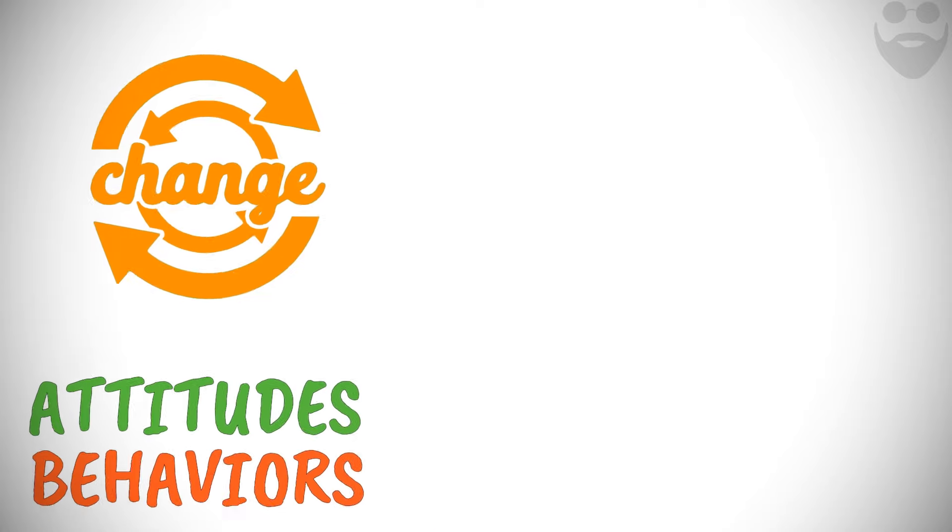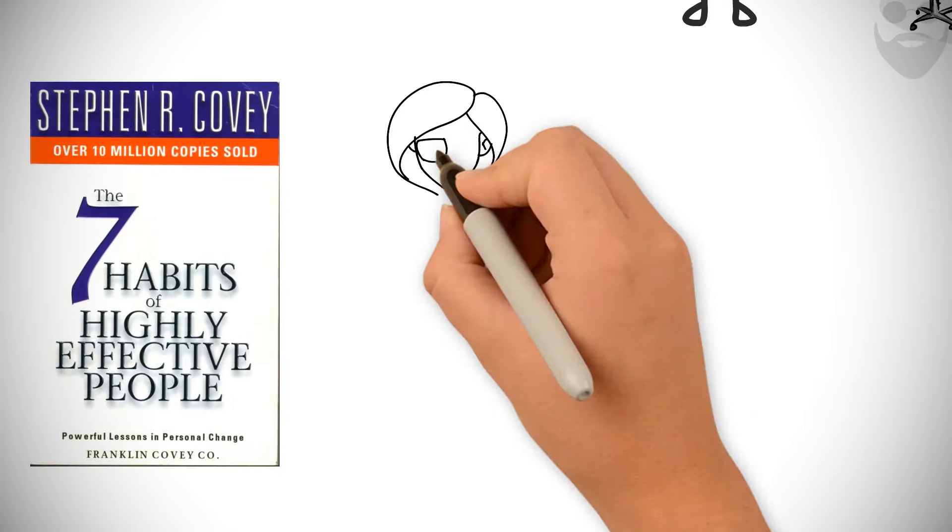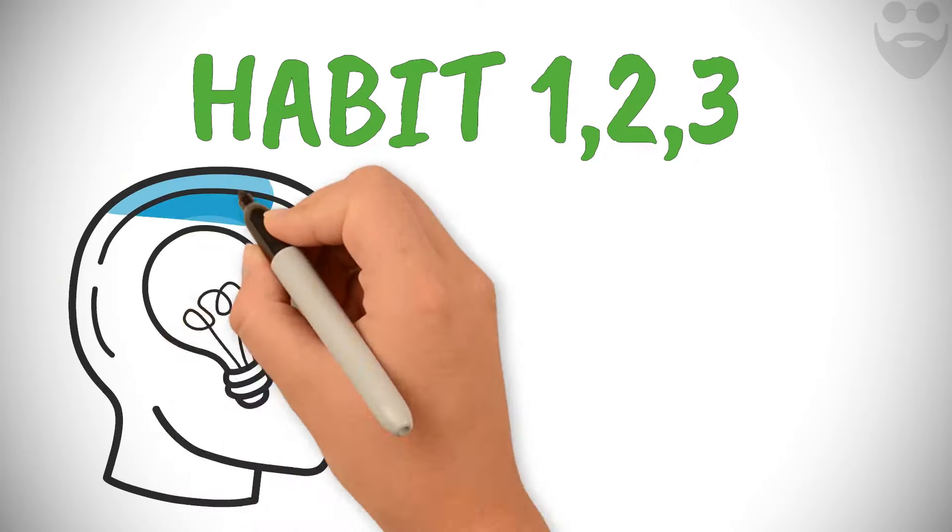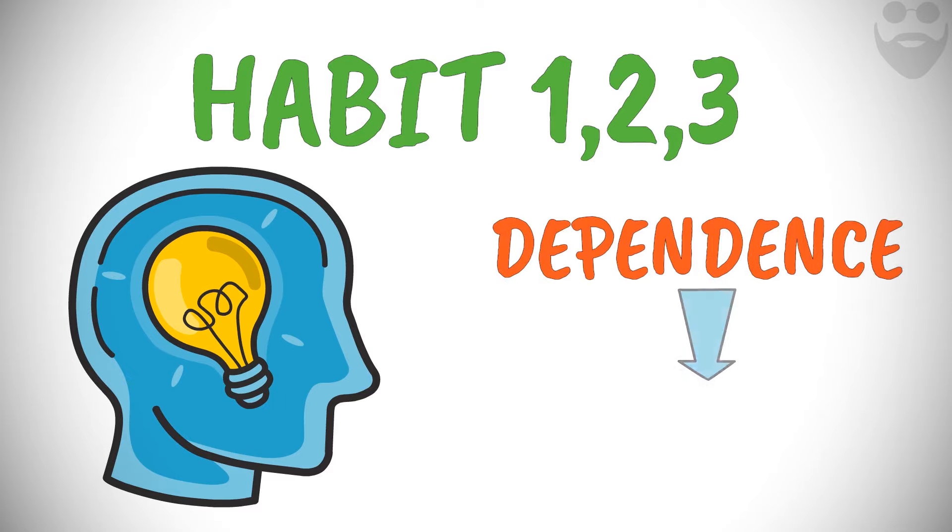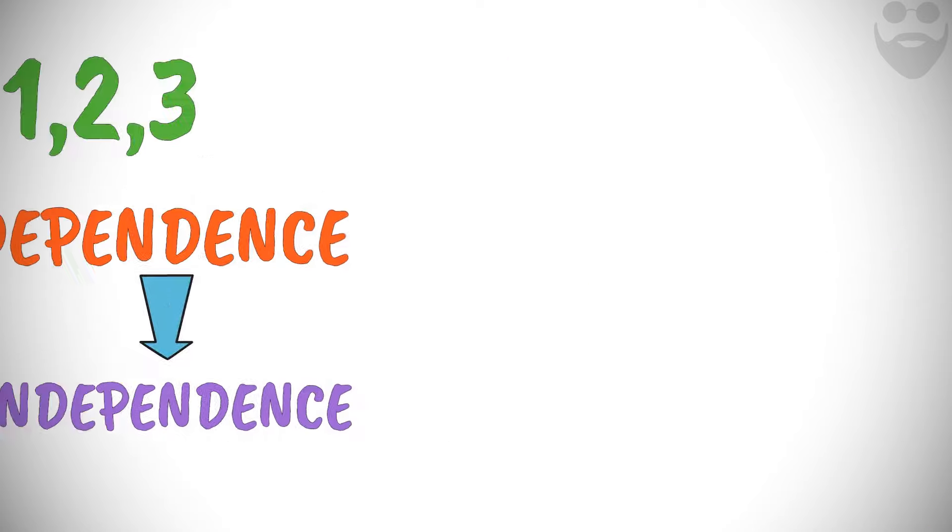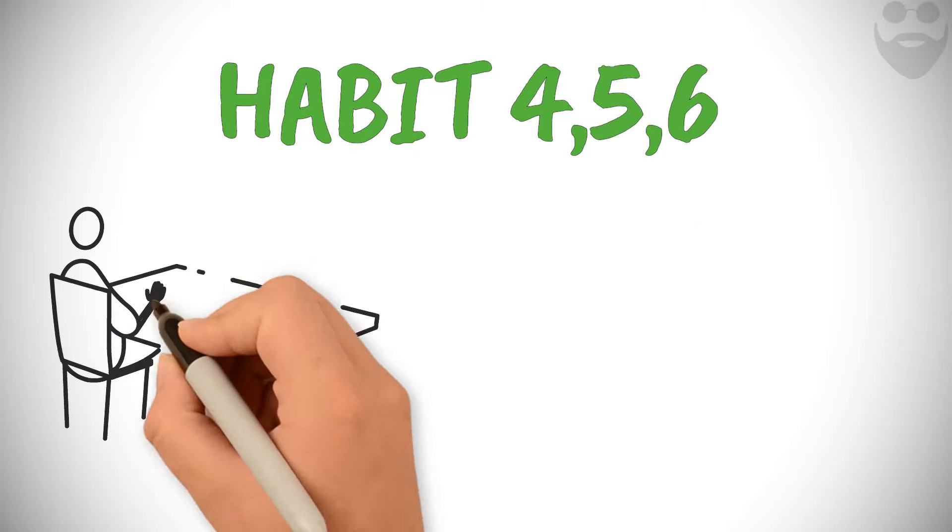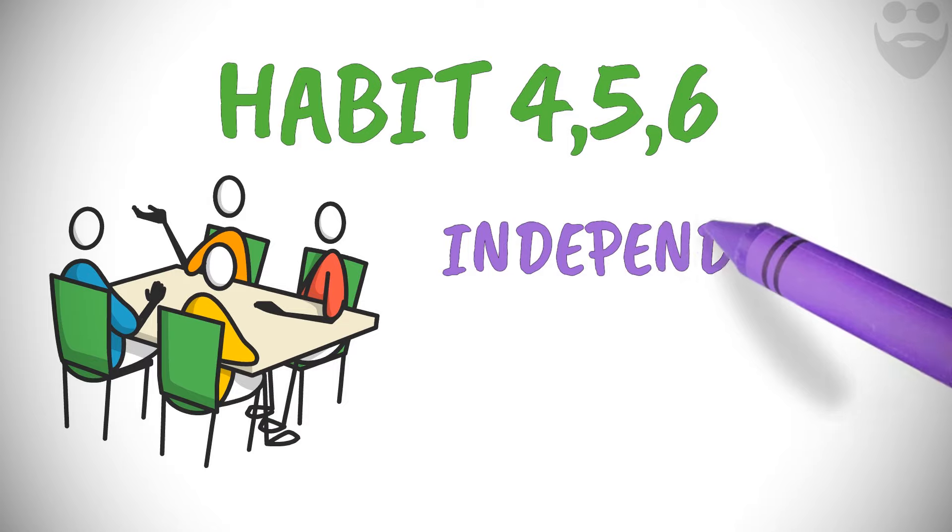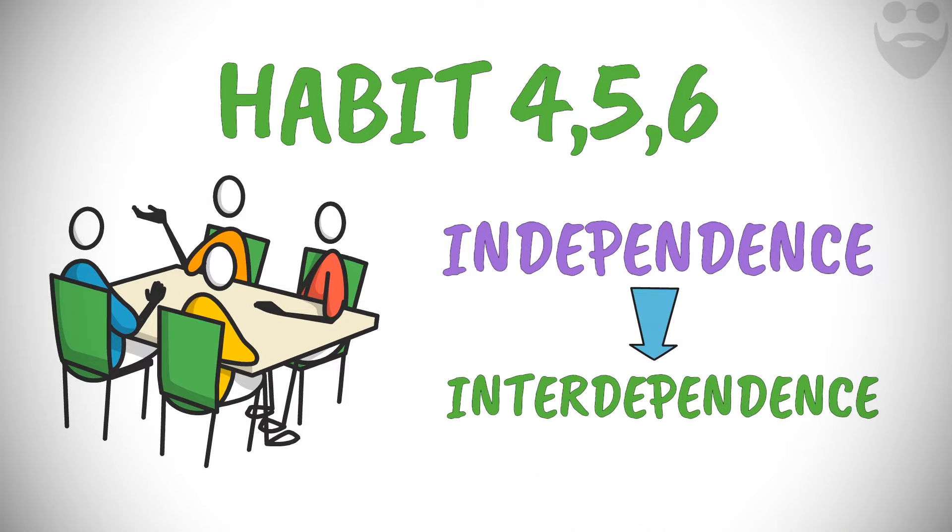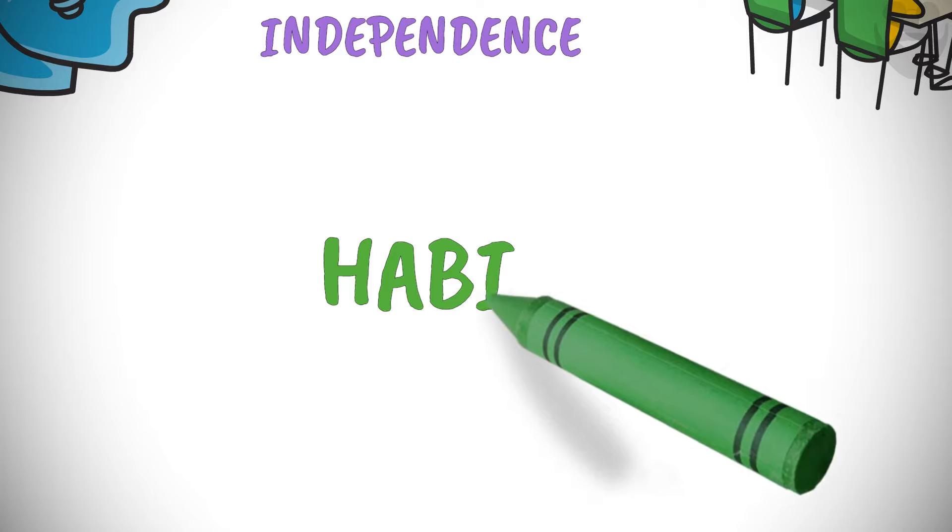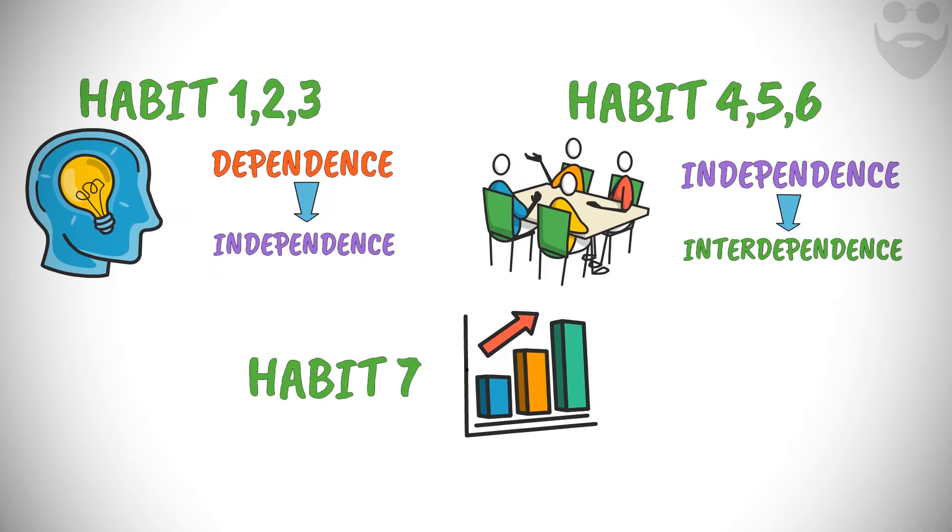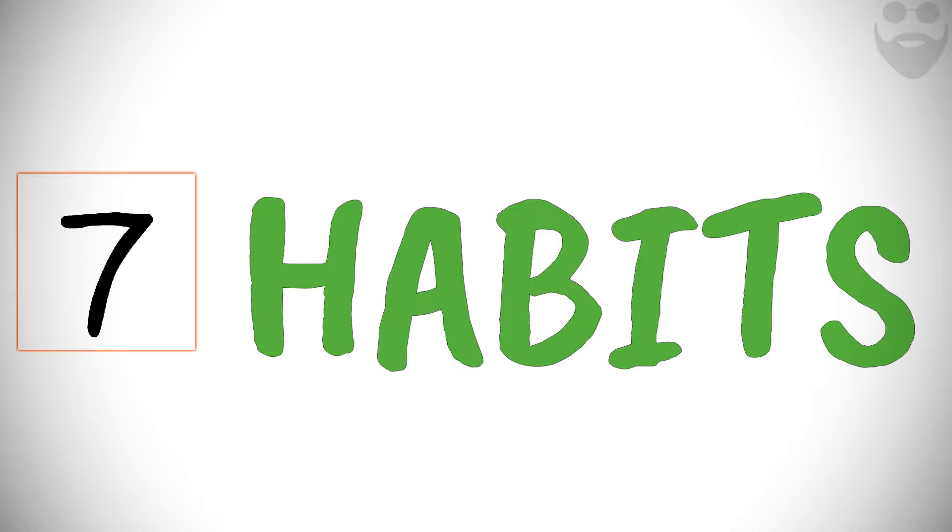That's where the seven habits of highly effective people come in. Here is a brief summary of this book. Habits 1, 2, and 3 are focused on self-mastery and moving from dependence to independence. Habits 4, 5, and 6 are focused on developing teamwork, collaboration, and communication skills, and moving from independence to interdependence. Habit 7 is focused on continuous growth and improvement and embodies all the other habits. Now let us discuss all the principle-centered seven habits in detail.